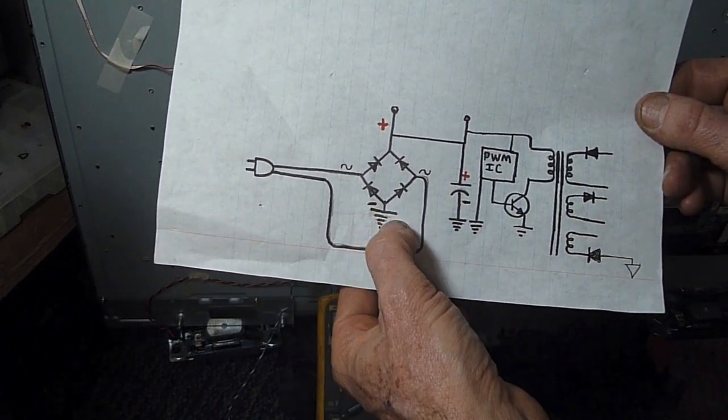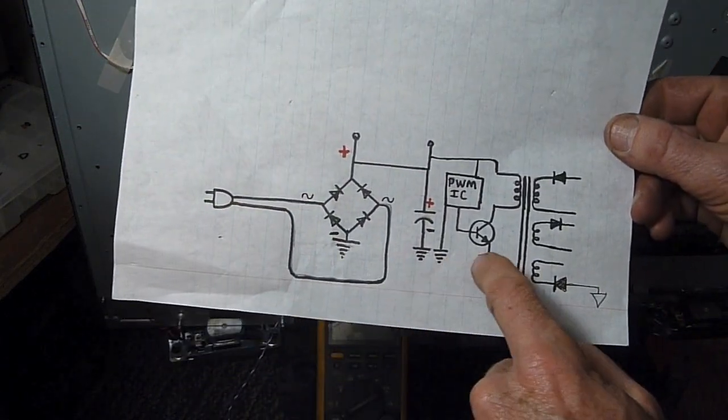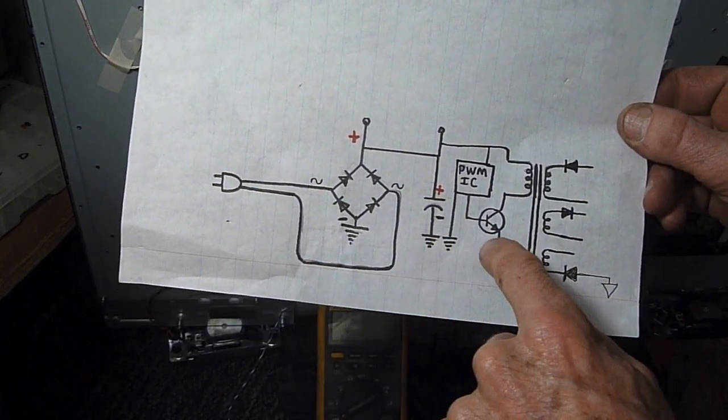you'd want to pick a ground that's on the hot side of the power supply. In this case, I would pick the ground on the bridge rectifier. Actually, you could pick any ground here. All these grounds with these symbols are tied together.